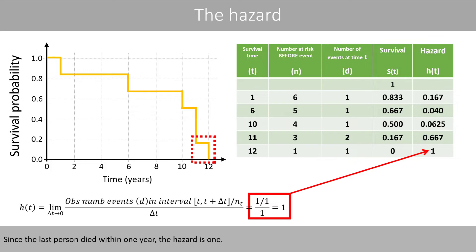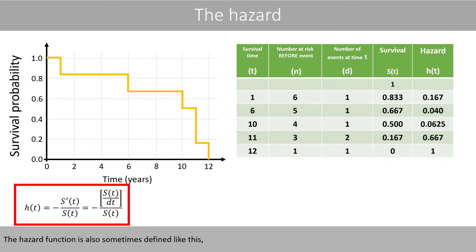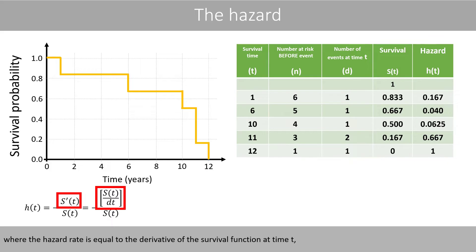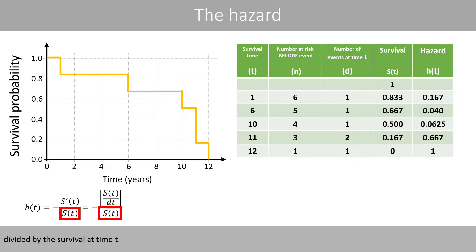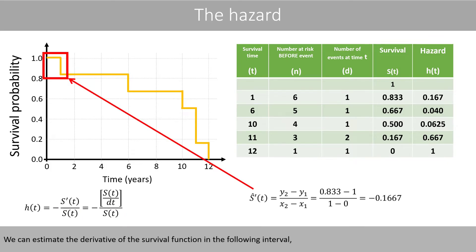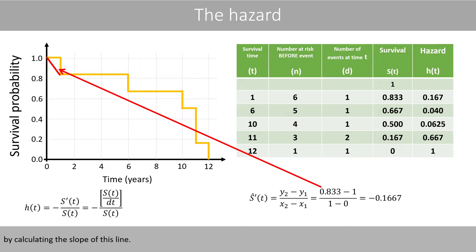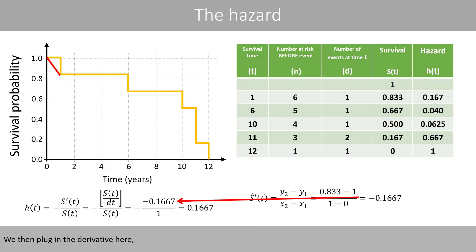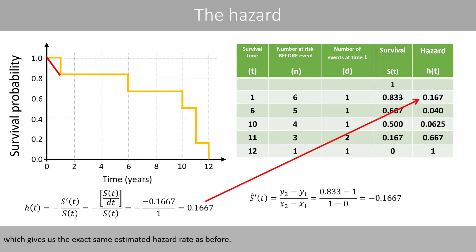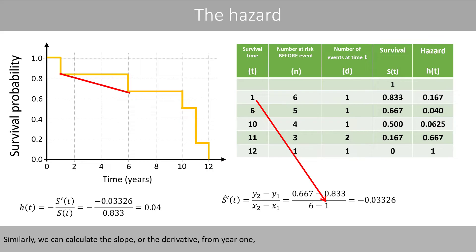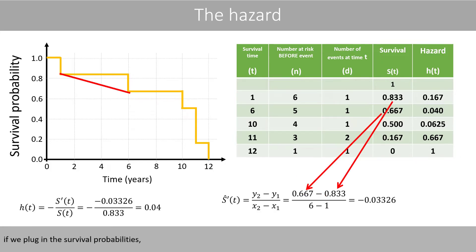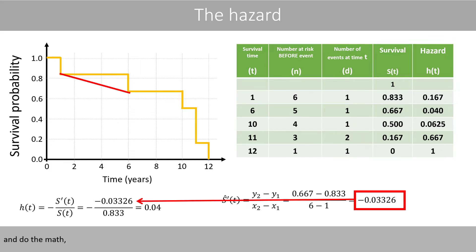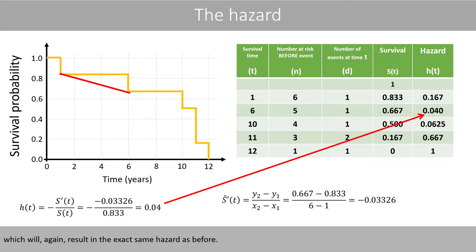Since the last person died within one year, the hazard is 1. The hazard function is also sometimes defined as the hazard rate being equal to the derivative of the survival function at time t divided by the survival at time t. We can estimate the derivative of the survival function in a given interval by calculating the slope of the line, then plug in the derivative and the survival, which gives us the exact same hazard rate as before. Similarly, we can calculate the slope or derivative from year one to year six, and if we plug in the survival probabilities and do the math, we again get the exact same hazard.